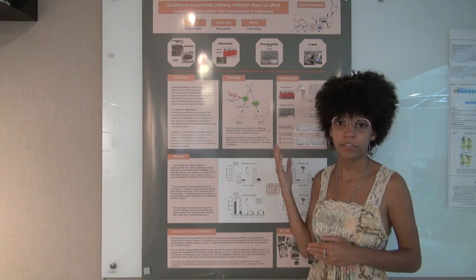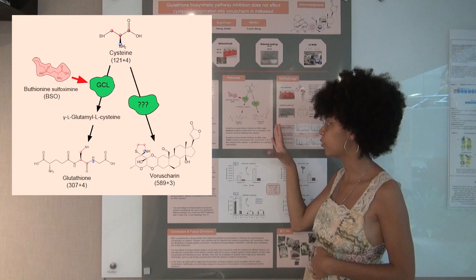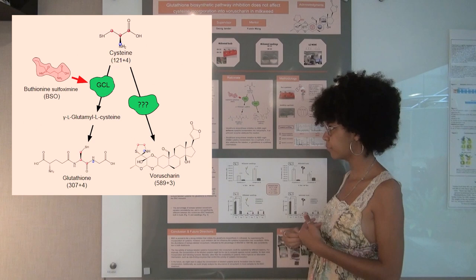Our main interest is to see how vishorin is structured and how the special sugar group is made. Recently, the Jander lab found that cysteine could be incorporated into the special sugar group found in vishorin and it's also incorporated into glutathione, which is another chemical.